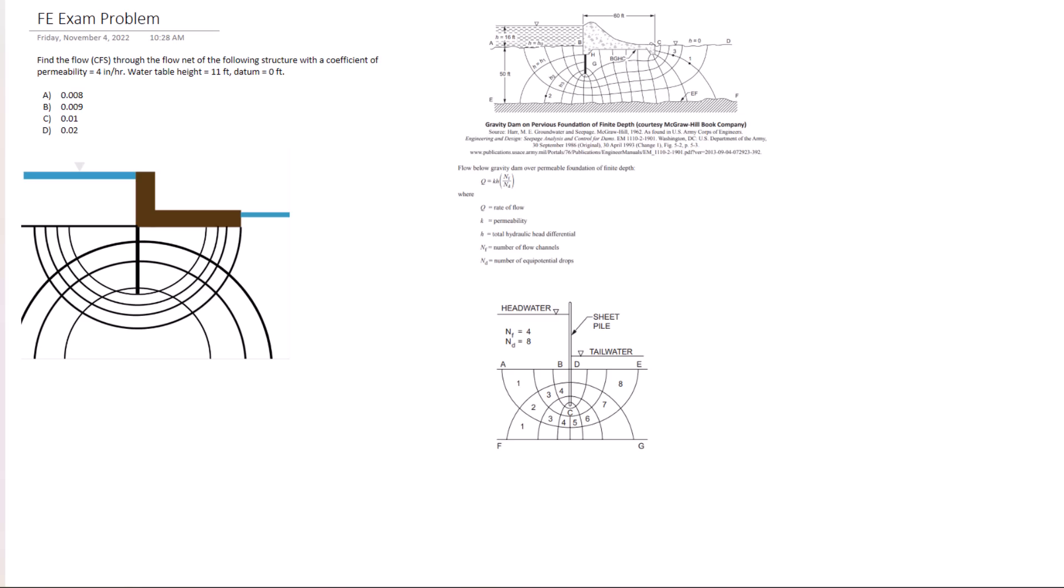Find the flow in CFS through the flow net of the following structure with a coefficient of permeability of four inches per hour. The water table height is 11 feet and the datum is zero. So from the equation we have...